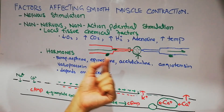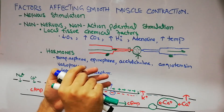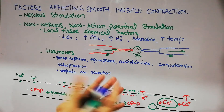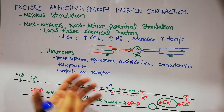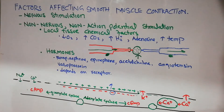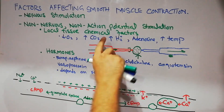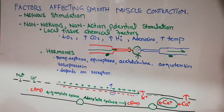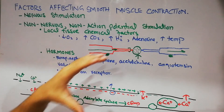This is a local factor acting locally. For example, at the finger level, if there is more demand for blood, there could be a decrease in oxygen or increase in carbon dioxide, so arterioles and venules here will dilate — that is an example of non-nervous, non-action potential stimulation. If the changes reverse — oxygen increases, carbon dioxide decreases, hydrogen decreases, adenosine goes away, and temperature reverts — then relaxation ends and contraction returns.